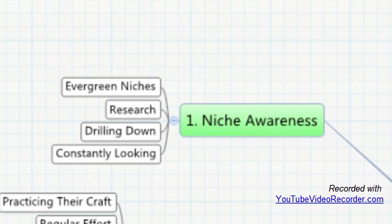In the first video, we're going to look at niche awareness. It's going to cover topics like the evergreen niches, how to research your topic and your niche. Also, why it's important to drill down into the niche to find the micro niches, which are often even more lucrative. We'll also find out why most internet marketers are constantly looking for new markets and new places that they can apply their business skills.